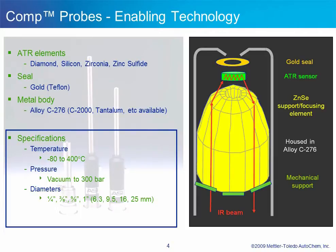Diamond is an extremely hard and chemically resistant material. However, diamond does absorb in the mid-infrared between about 2250 and 1950 wavenumbers. If you need to monitor in that region for components such as metal carbonyls, isocyanates, or nitriles, then we have sensor materials of silicon or cubic zirconia available. In addition to the gold seal, a Teflon seal is also available, and many different types of probe housings can be used, including tantalum, titanium, and other alloys.